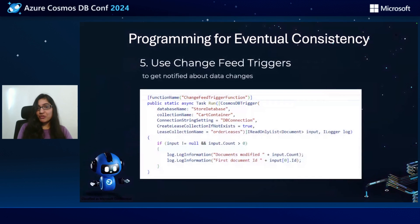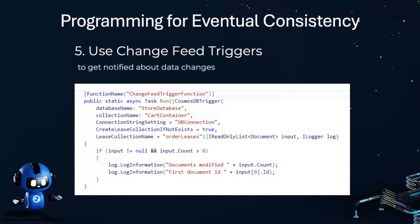And the fifth one: change feed triggers. This is really important, especially when building reactive models. Instead of constantly polling for data changes or dealing with complex synchronization logic, the change feed gives you a reliable stream of all the inserts, updates, and deletes happening in your Azure Cosmos DB container — like having a live feed of everything happening in your database. While building applications using Cosmos DB, see if change feed fits the scenario, and if yes, do build using this functionality.